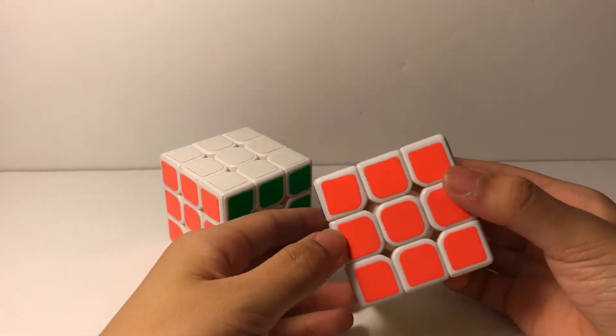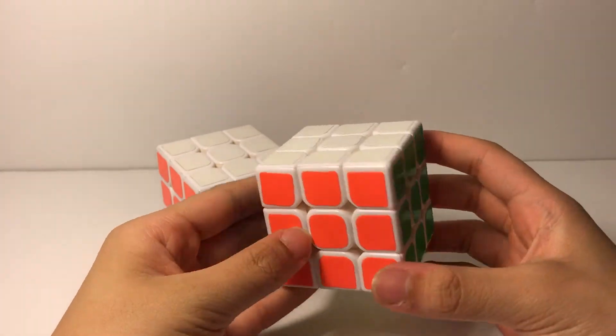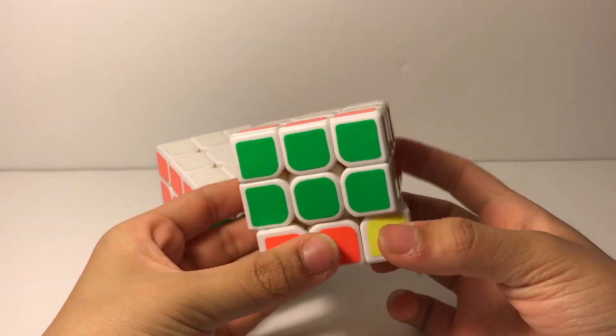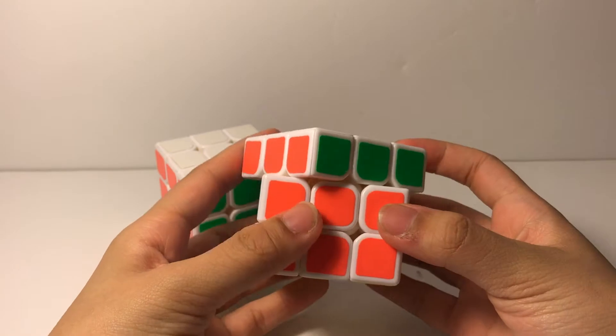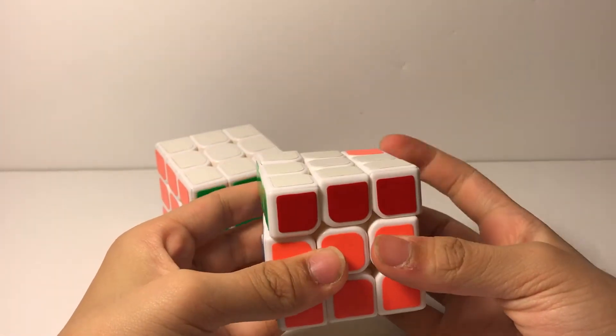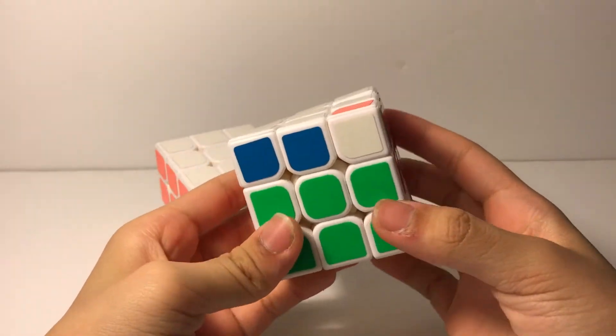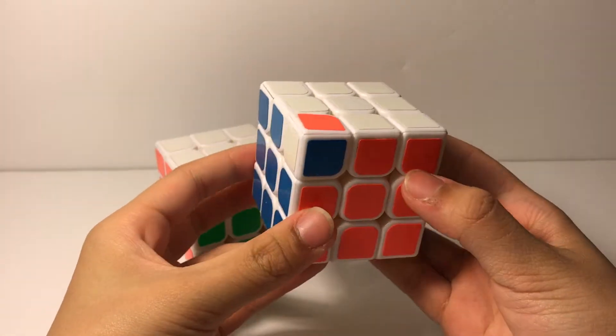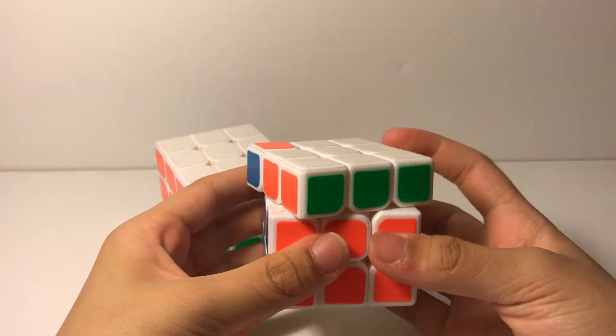Although these cubes are pretty old, let me give you some background. The Moyu Aolong first came out, and this was the V1, and Felix Zemdegs had originally set a record on it. But as you can see, this cube wasn't very stable, and he set the record, but it did not count because he had a corner twist.